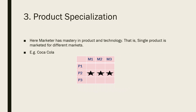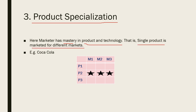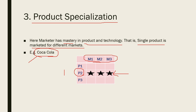The third is product specialization. Product specialization means the marketer has mastery in product and technology, and a single product is marketed across different markets. For example, Coca-Cola — it is sold in Maharashtra, Gujarat, and foreign countries. So one product is sold in various types of markets.